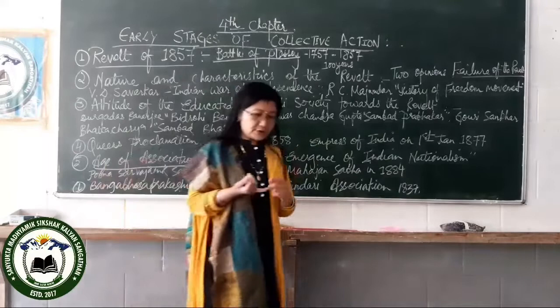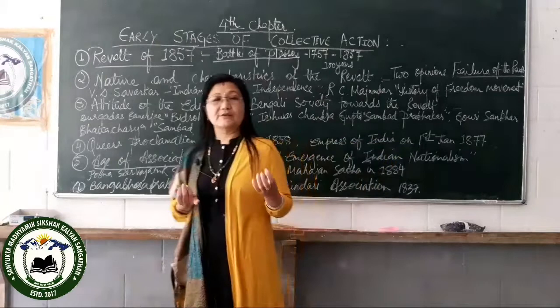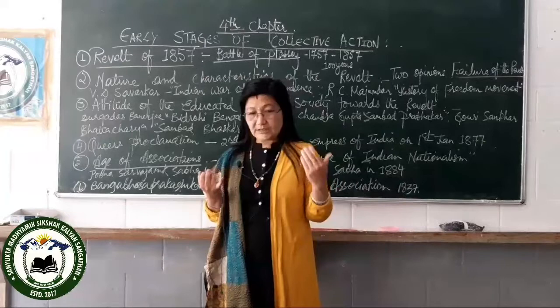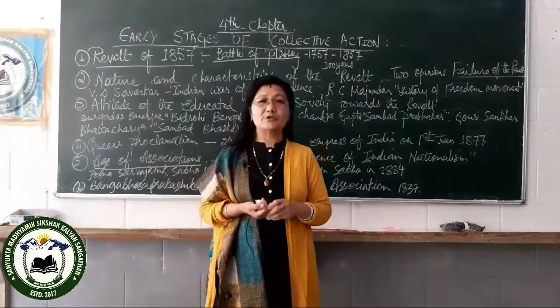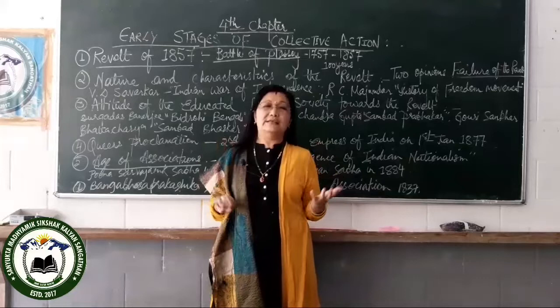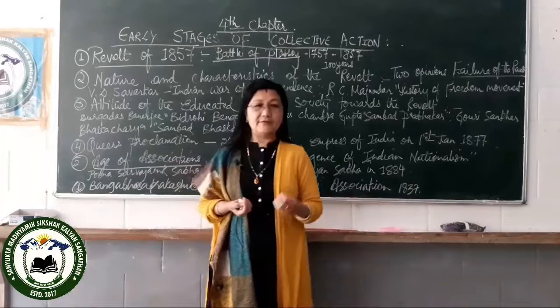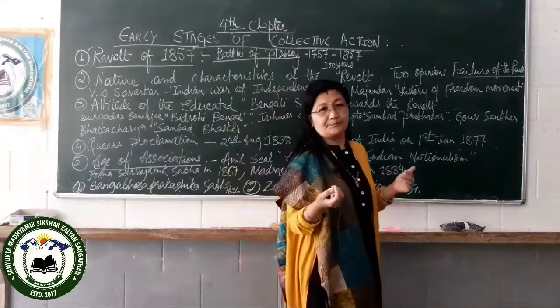In the Queen's Proclamation it was stated that they would abolish the Doctrine of Lapse — meaning Indians could adopt heirs and had the right to adopt. The British would not follow the policy of territorial expansion and would not occupy any territory. They would allow people to retain their titles — such as the title of Peshwa held by the rulers of Maharashtra. They would give jobs to people according to qualification. They would treat everyone equally, irrespective of race, creed, or colour. They would also give importance to the treaties that had been signed earlier with the Company or anyone else.